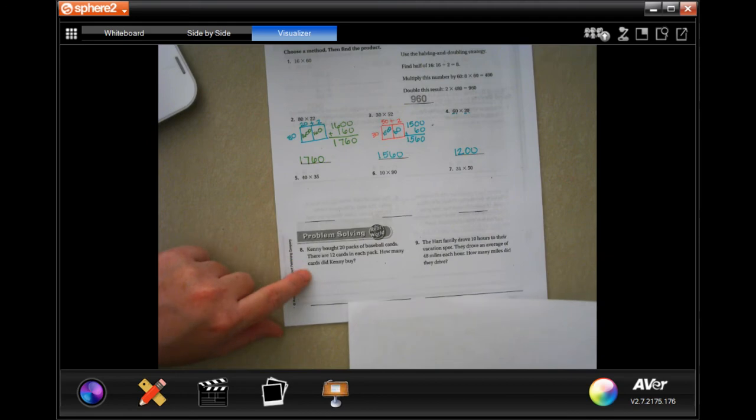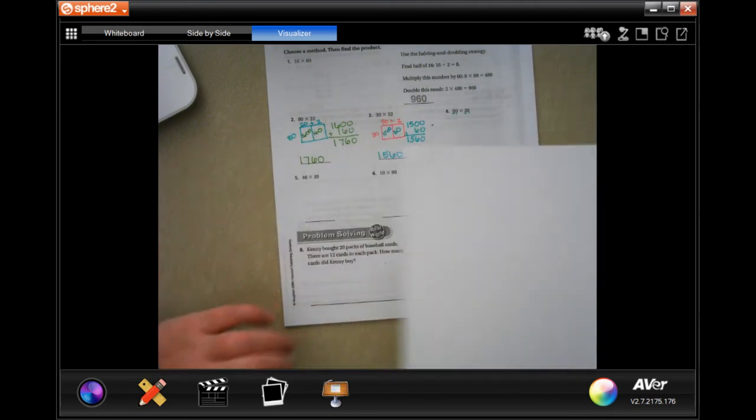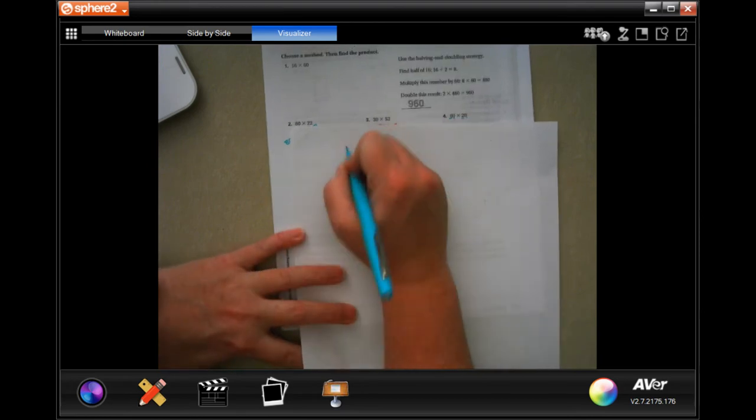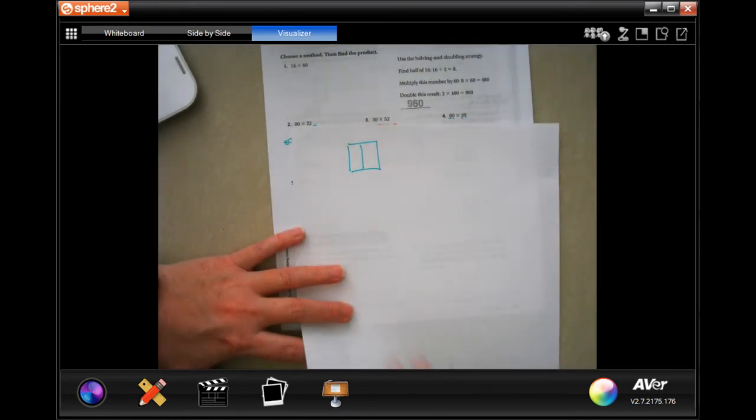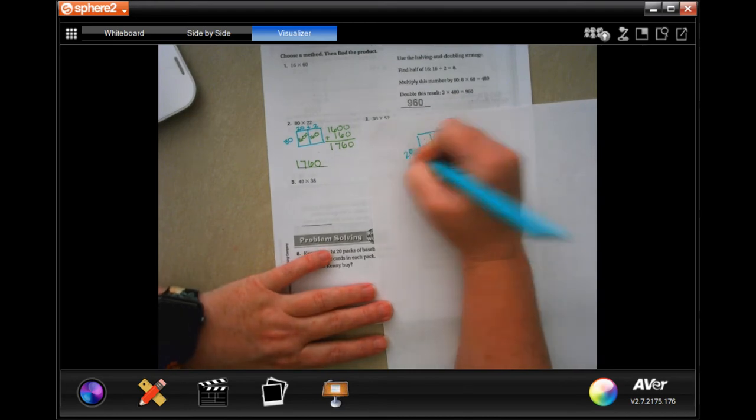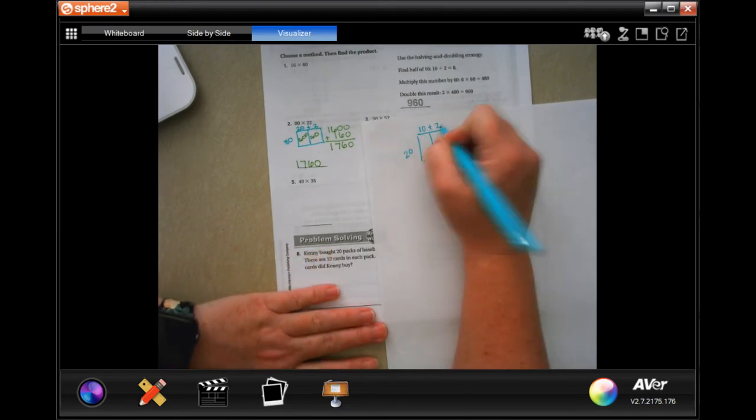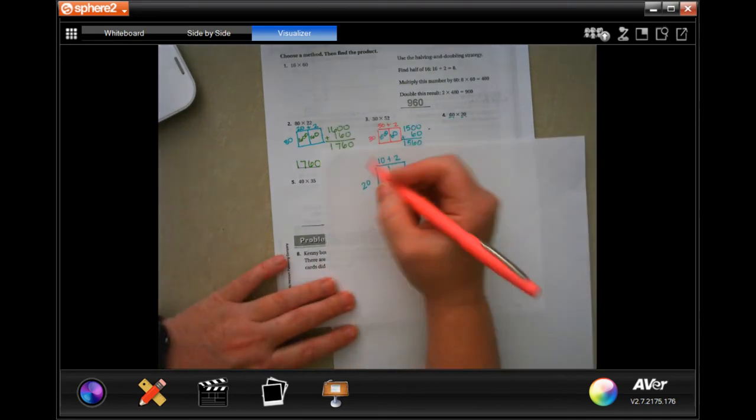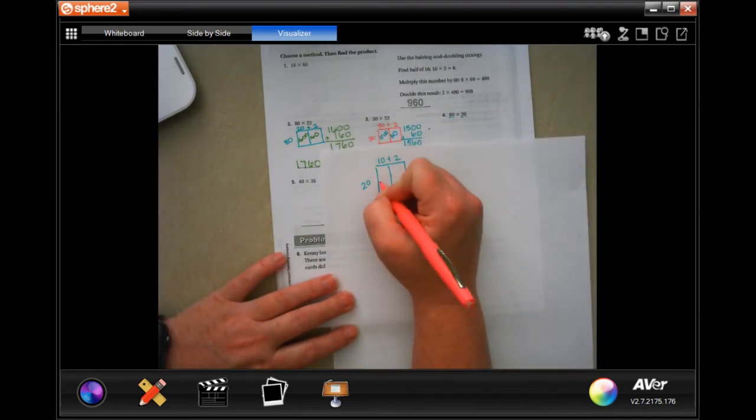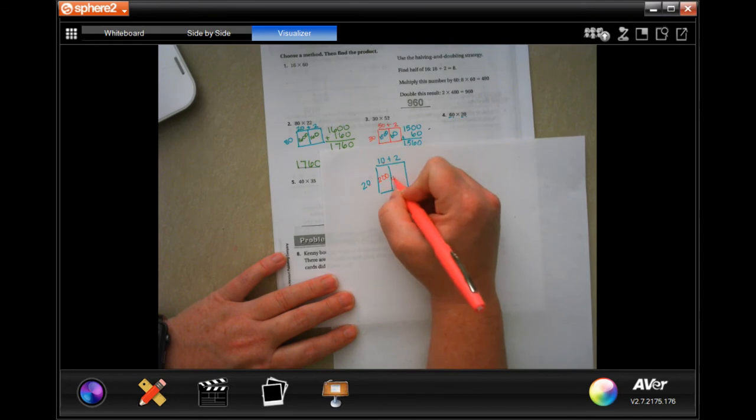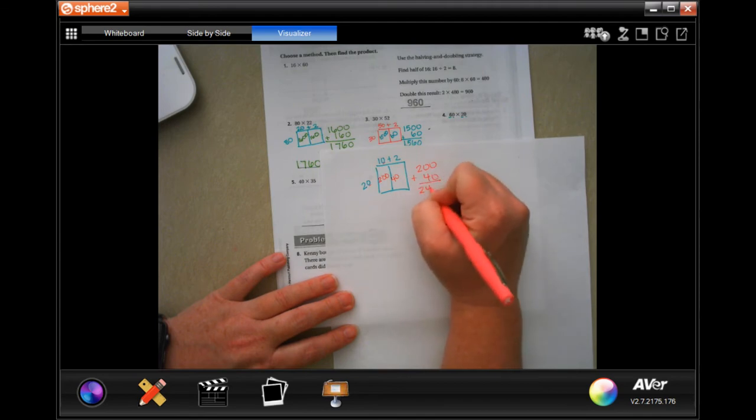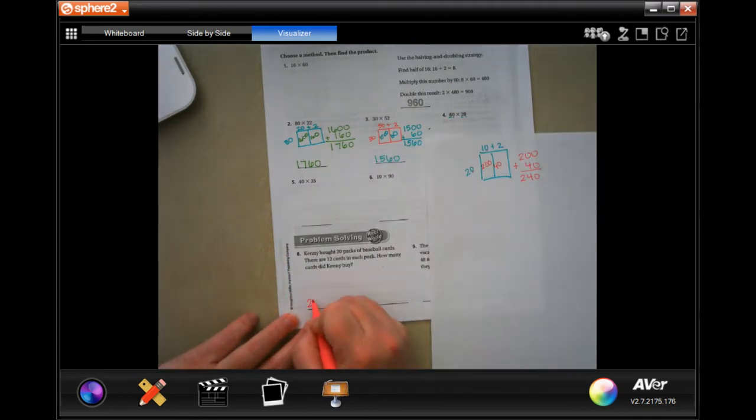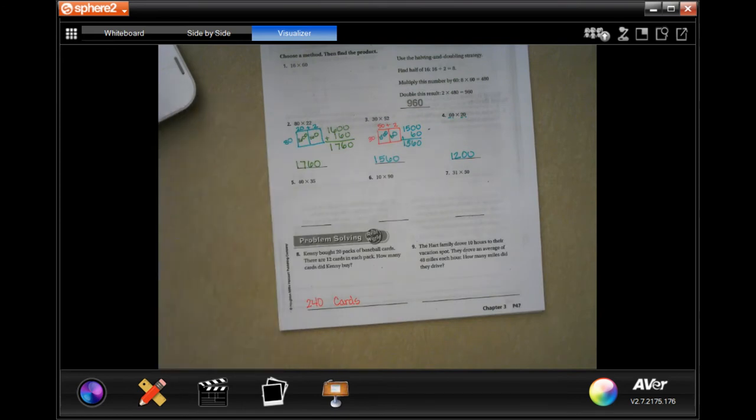It says, can you buy 20 packs of baseball cards? There's 12 cards in each pack. How many cards do you can buy? So we're going to draw our box. And 20 on the side, and 12 is 10 plus 2. So 20 times 10, 2 times 1 is 2, and then there's 1, 2, 0, 200. 2 times 2 is 4, plus that 1, 0. So now I have 200 plus 40, 240 cards.